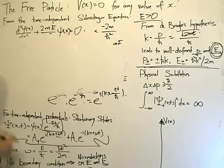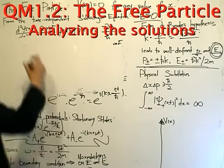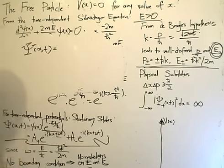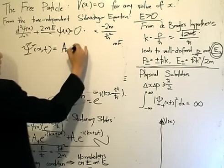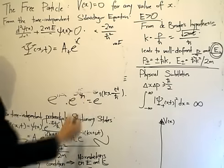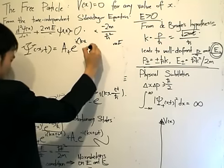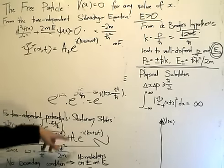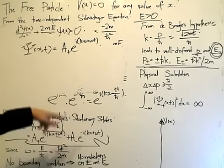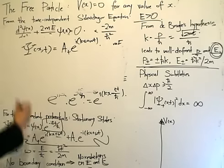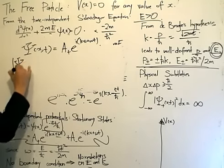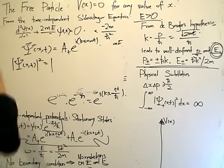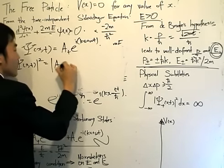I'm going to take one solution — basically this solution over here. Capital Psi in terms of x and t is going to be equal to A-plus times e to the ikx plus omega t. So this is really one of the solutions. I can take a linear combination of the two, but I just want to take one and see what I get. The probability density is given by the magnitude of the function squared. Let's apply that and see what we get.